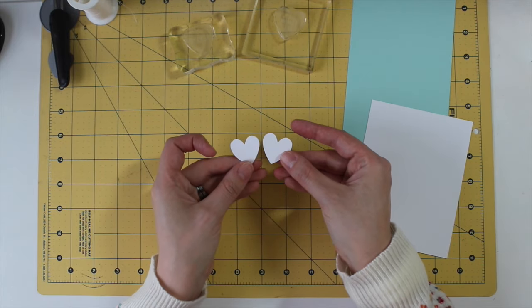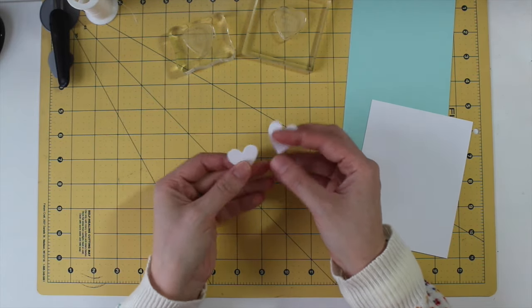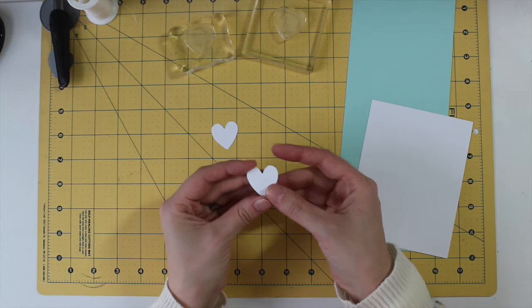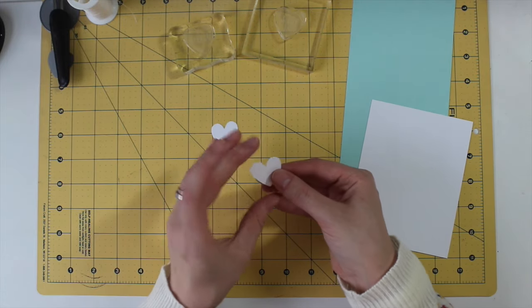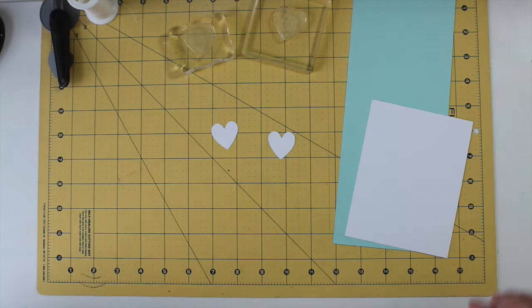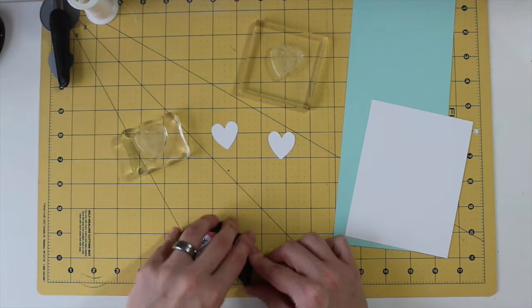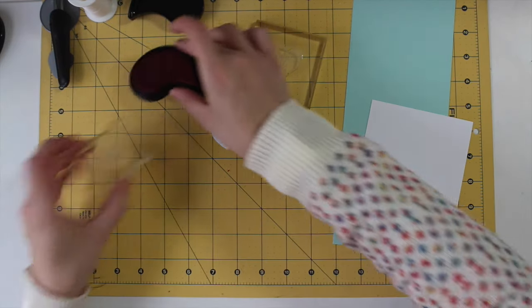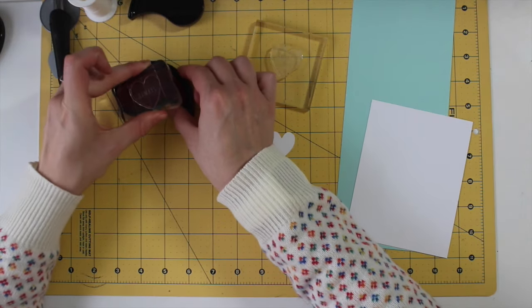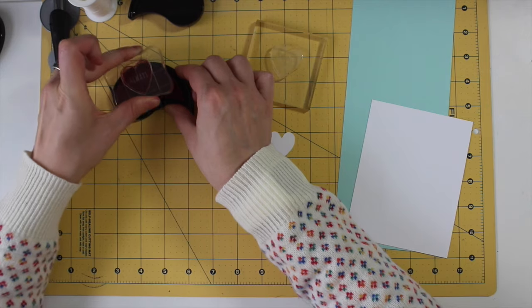Now to do this technique, ideally you want to use symmetrical die cuts. These hearts are just barely off symmetry, so I'm actually stamping on the back of one of them. So when I die cut, I just used a clean cutting plate and made sure there wasn't any scarring on the back.